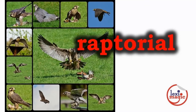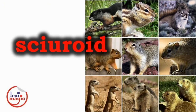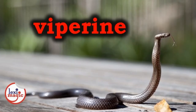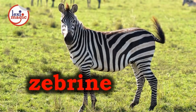Raptorial relates to birds of prey. Interestingly, raptor means plunderer in Latin. Sciurine means resembling a squirrel. Vermicular means resembling a worm. Viperine means like a viper. Zebrine means like a zebra.